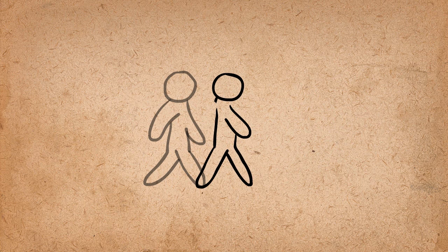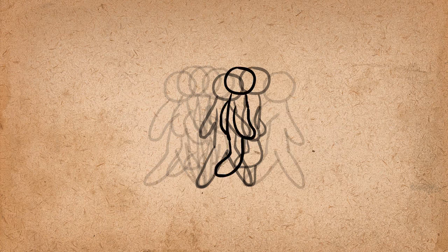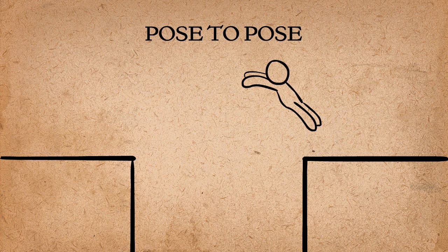The second method, pose to pose, is where you draw the beginning and end of each main pose and go back later to fill in the drawings in between. So there are benefits to both methods. Pose to pose is generally better for most actions because it gives you the most control.